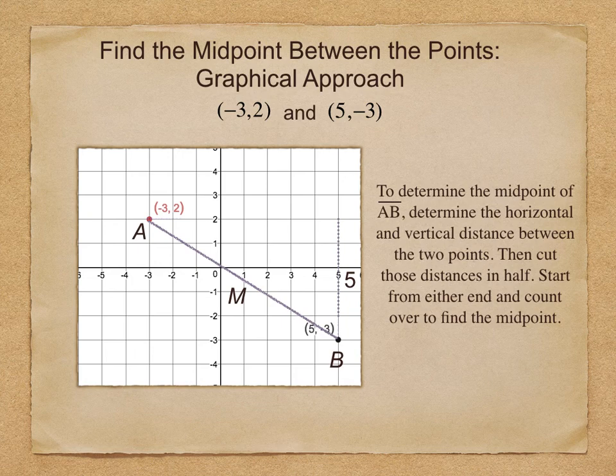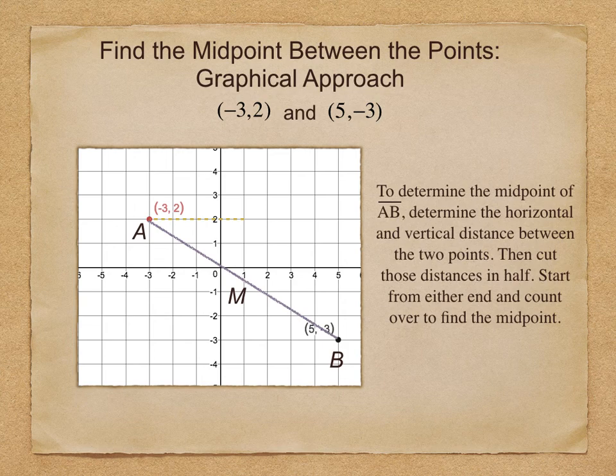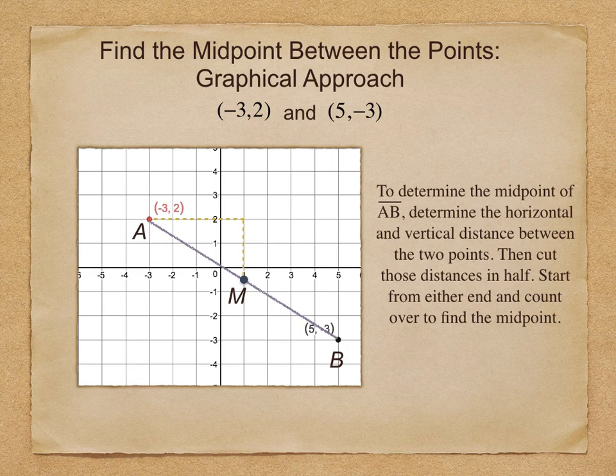From point A, we're going to count 4 over, and then half of 5 is 2.5 down. So the midpoint lies right there.